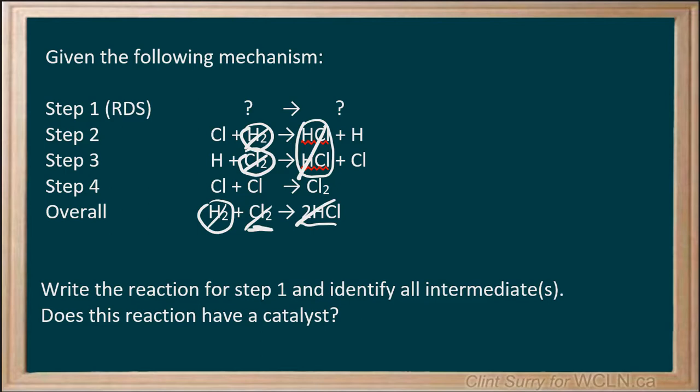We've accounted for everything that's in the overall reaction. What's left has to be sorted out. I can see a Cl at the beginning and at the end here, so we've accounted for that one. I can see an H here and it was made in the previous step that lets us account for that one.